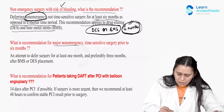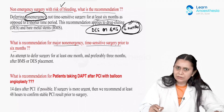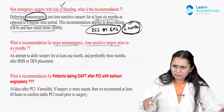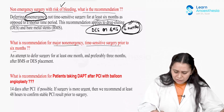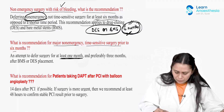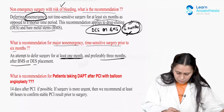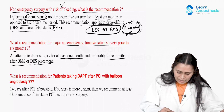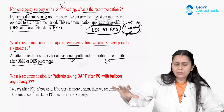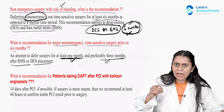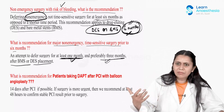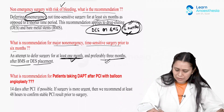What is the recommendation for major non-emergency time-sensitive surgery prior to six months? If surgery needs to be done quickly but the six-month framework has not passed, at least one month gap should be there — preferably three months — after a bare metal or drug-eluting stent. If it is a pure emergency, you have to take the patient immediately. For time-sensitive surgery, at least one month, best is three months, and if time permits, six months.